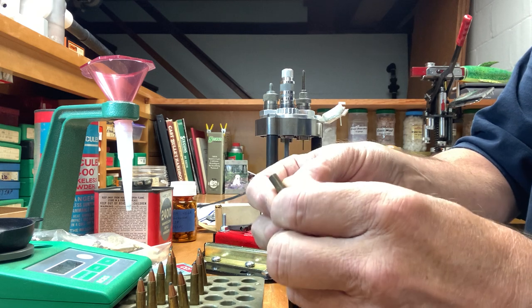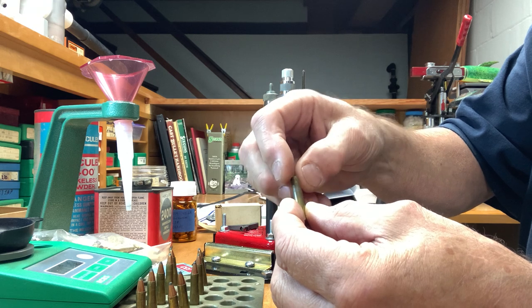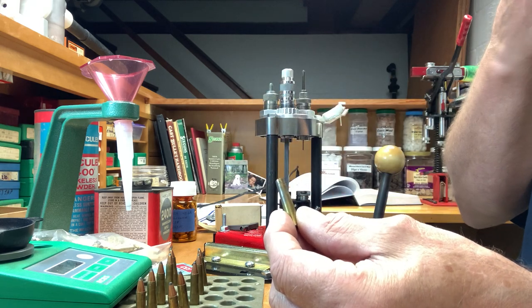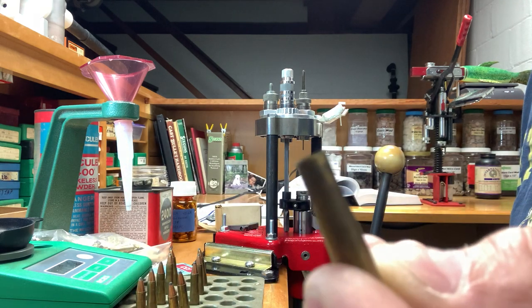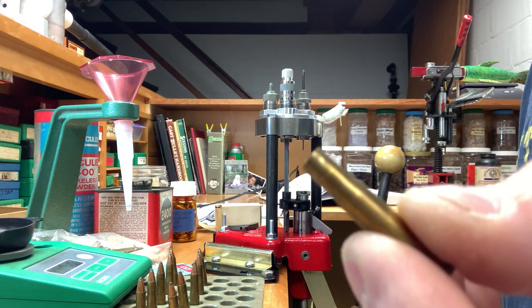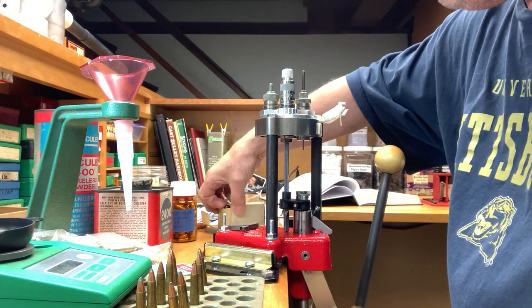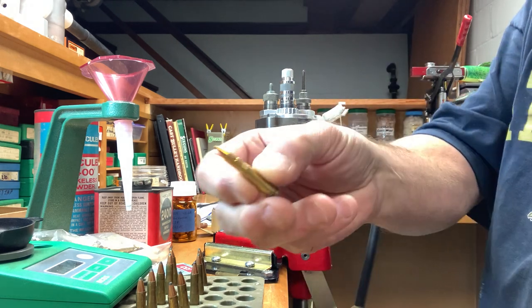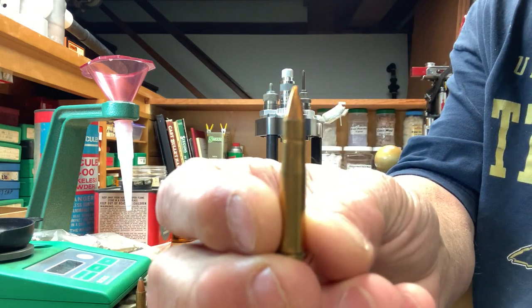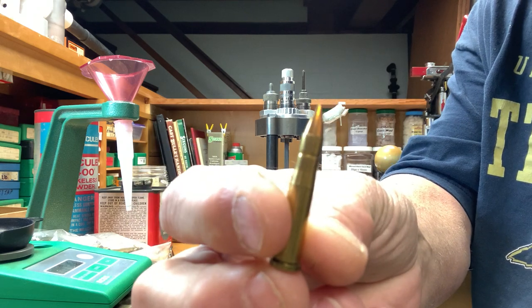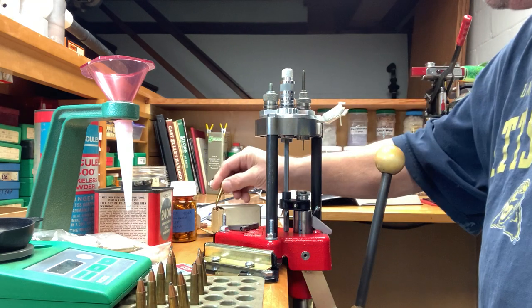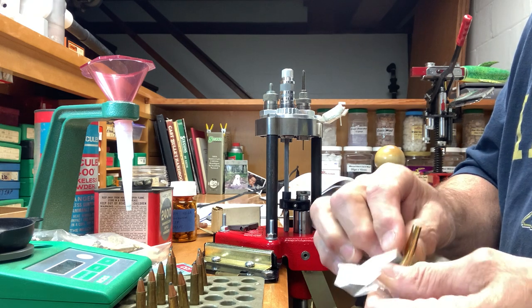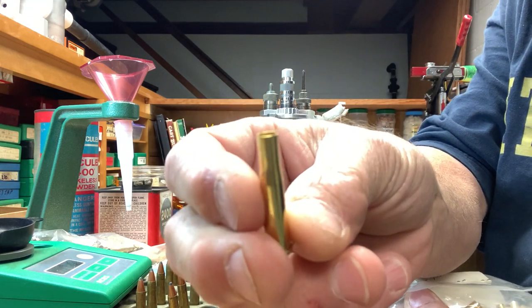That expander section on that decapping pin will actually break the top of this off here. Now this is a reloaded round - you'll see that there's a line going around there. That is because when you buy factory loaded .22 Hornet, they look like this. See how the case has that indentation on it where the bottom of the bullet sits down in there? But when you just buy new brass, it doesn't have it on there.